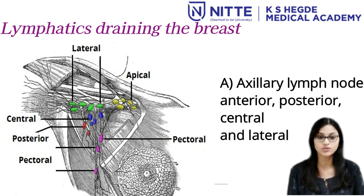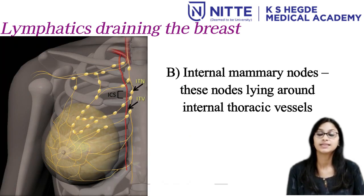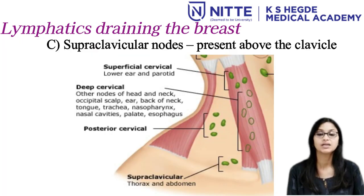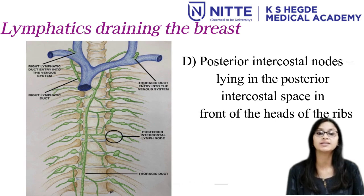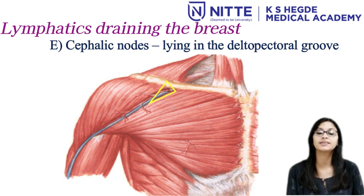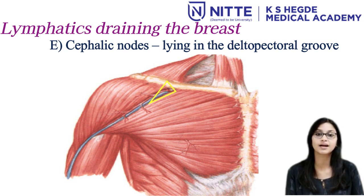The lymph nodes draining the breast are the axillary group of lymph nodes, which contains anterior or pectoral, posterior group, central, and the lateral group. The internal mammary nodes are lying around the internal thoracic vessels. Supraclavicular nodes are present above the clavicle. The posterior intercostal nodes lie in the posterior intercostal space in front of the heads of the ribs. The cephalic nodes lie in the delto-pectoral groove. These are the lymph nodes where the lymphatics of the breast drain into.